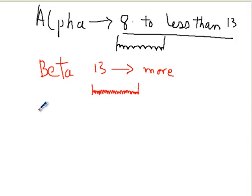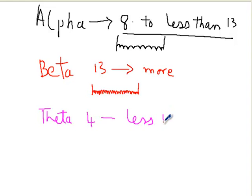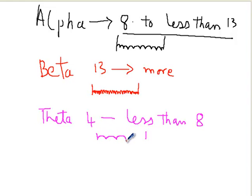Theta frequency ranges from 4 to less than 8 Hz. So if this is one second apart and you count the waves — one, two, three, four, close to five waves in that one second — you call it a theta frequency.